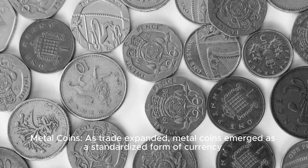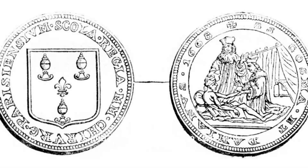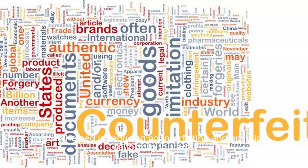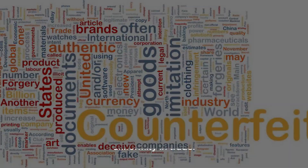Metal Coins: As trade expanded, metal coins emerged as a standardized form of currency. Governments and rulers began issuing coins with specific weights and designs, which helped in reducing counterfeiting and ensuring uniformity in trade.